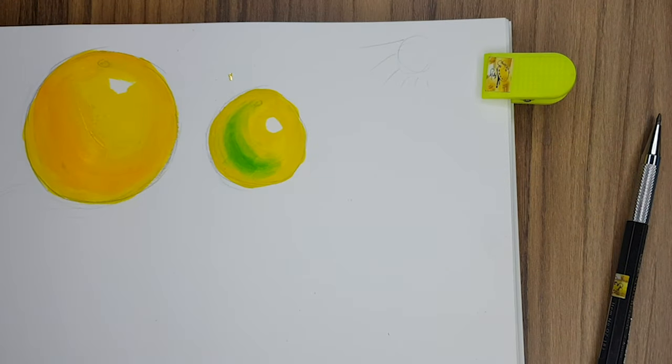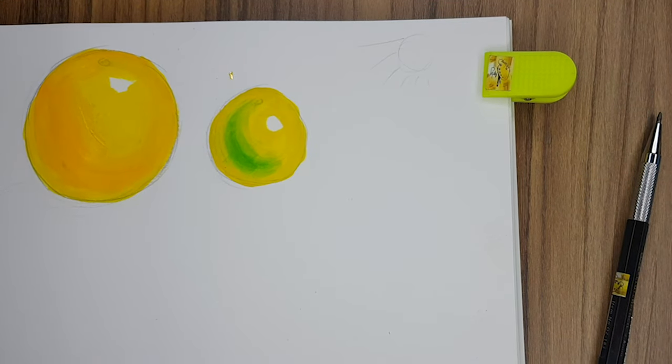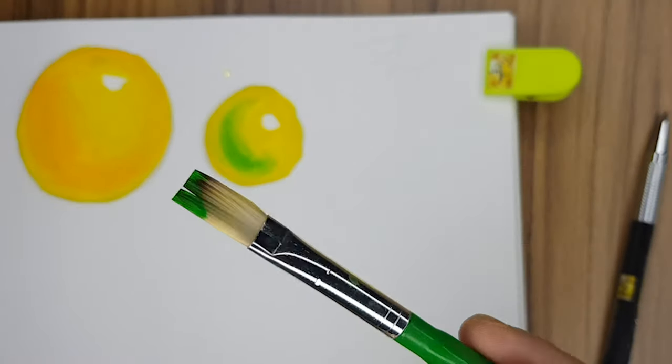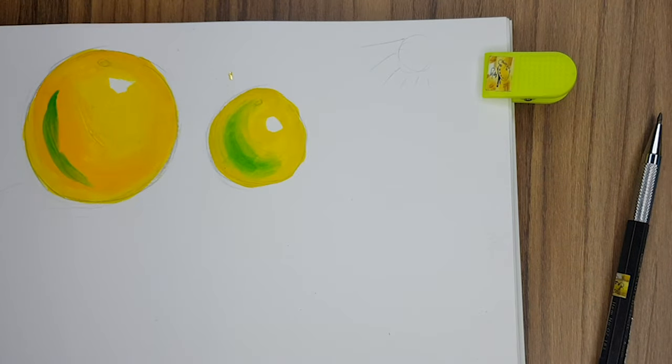Now take very little green and add the roundness as you see in the picture, and mix it nicely with the chrome yellow color.